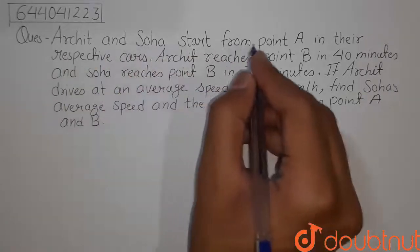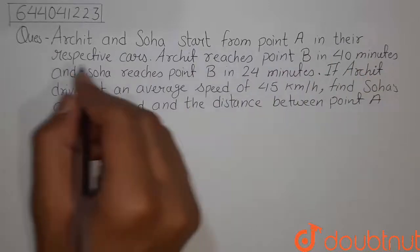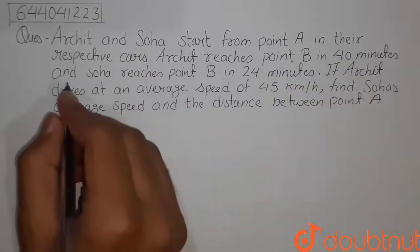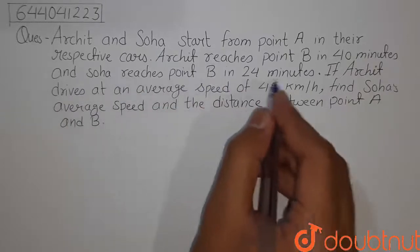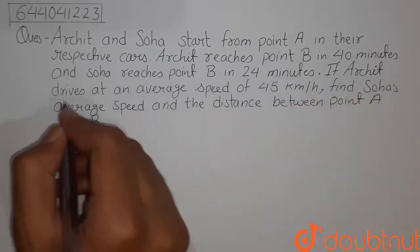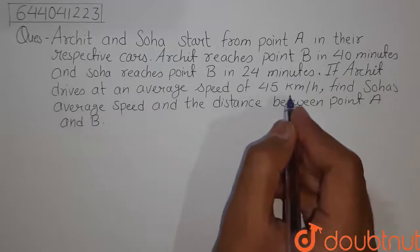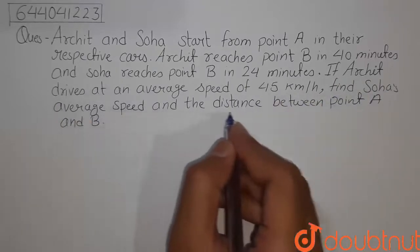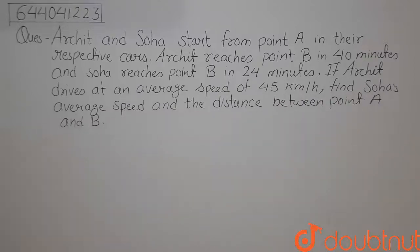Archit and Soha start from point A in their respective cars. Archit reaches point B in 40 minutes and Soha reaches point B in 24 minutes. If Archit drives at an average speed of 45 km per hour, find Soha's average speed and the distance between point A and B.